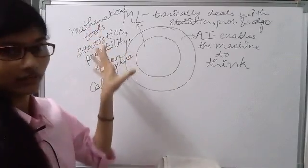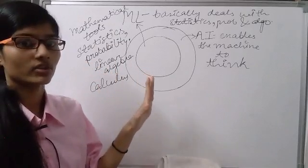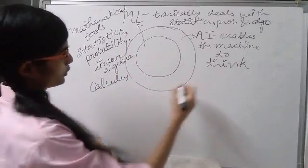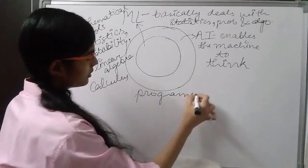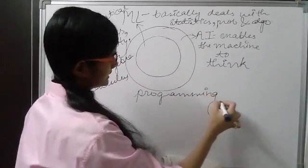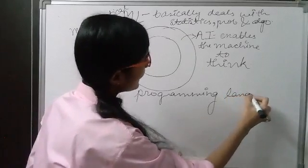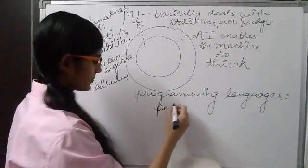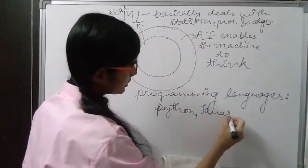Now, we have learned about mathematical tools. Now, which programming languages are used for ML? So for programming languages, you all must be guessing that different languages and you all must be right for that because Python, Java, JavaScript, Scala, Julia, many are there.